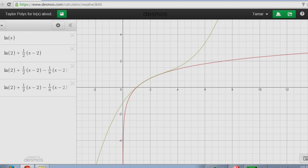And the third degree Taylor polynomial, even better, about x equals 2.